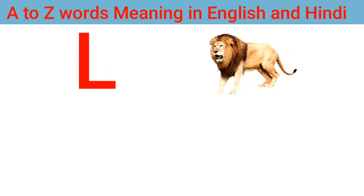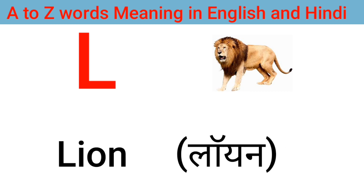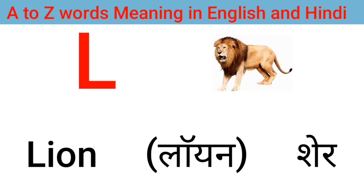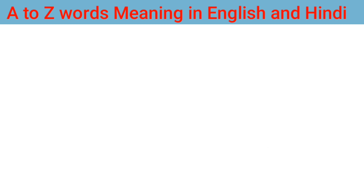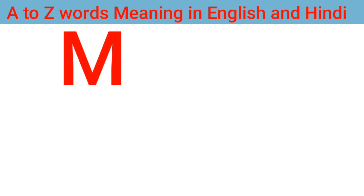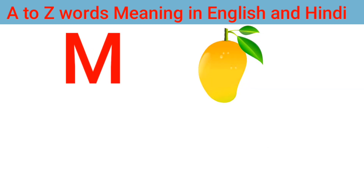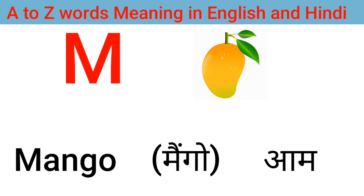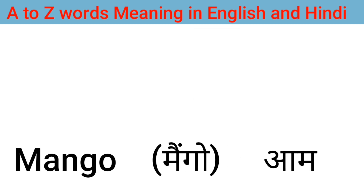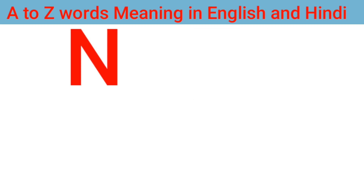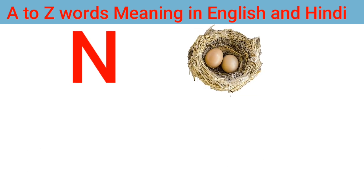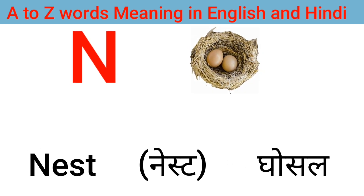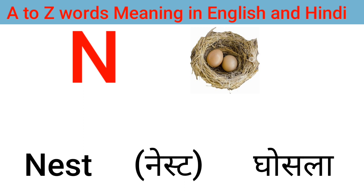L for lion, lion means sir. M for mango, mango means arm. N for nest, nest means ghosla.